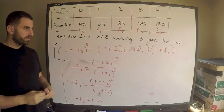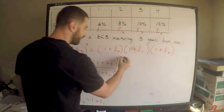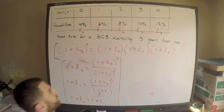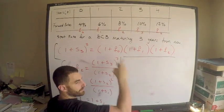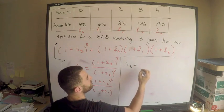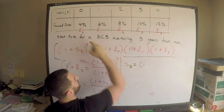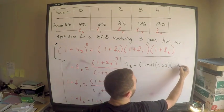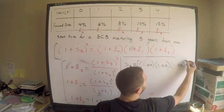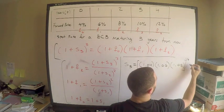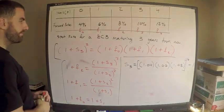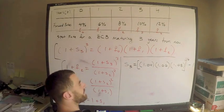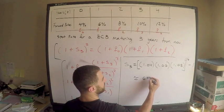This is the relationship you want to use. The three-year spot rate equals: one plus f₀ times one plus f₁ times one plus f₂, all to the one-third power, minus 1. So: 1.04 times 1.06 times 1.08, to the one-third power, minus 1. Take the cube root of both sides, subtract one, and you get approximately 6%, or 0.06.